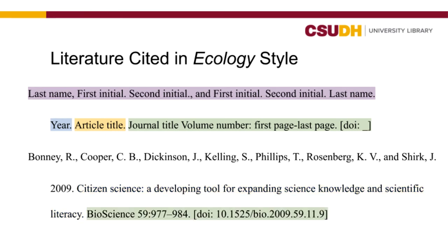After that, include the academic journal where the article was published. Academic journals typically publish collections of articles throughout the year, in volumes. Include the volume number, colon, and the page range, if there is one. Finally, include the DOI, or digital object identifier, if it's available in brackets. This is a direct link to the article on the publisher's site.